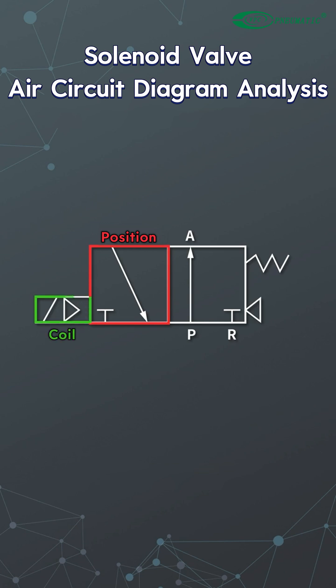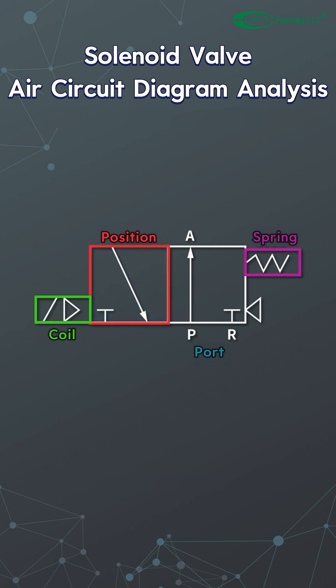The pattern on the left represents the solenoid coil. The pattern on the right represents the spring. The box near the solenoid coil represents the state of the valve spool when the coil is energized. The box near the spring represents the valve spool state when the spring is reset after the coil is de-energized.